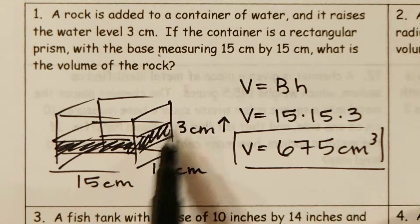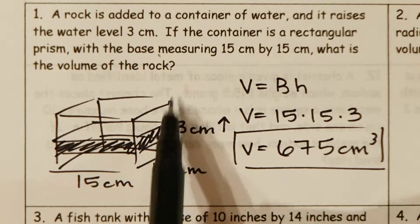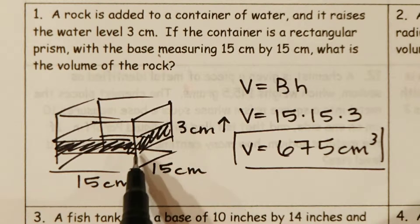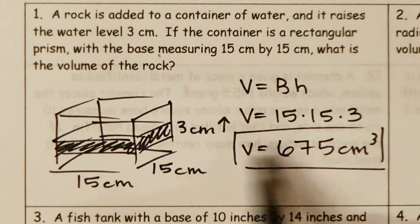So we've got the displacement accounted for here by the 3, so we're not using the entire height, just the 3 cm that the water was displaced in order to find the volume of the rock.